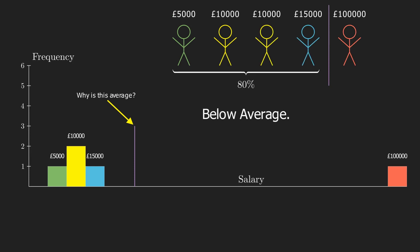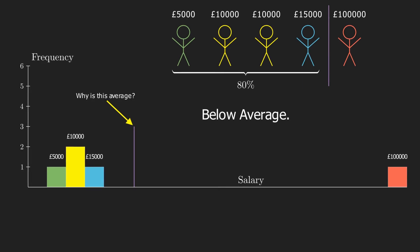Now, clearly this example is somewhat contrived, but the effect is real. In the UK, for instance, the mean income of all the residents is about £8,000 higher than a more representative middle of the data set. So what can we do about this?